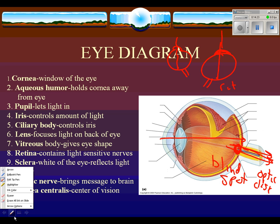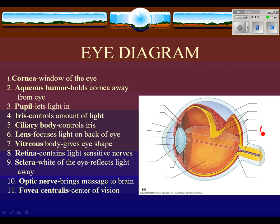Number eleven is the fovea centralis, located directly behind the lens. That is the center of your vision. If you concentrate on what's not in the center of your vision right now, you'll notice it's a little foggy — you can't see it very well. Next time we meet, we'll discuss why the fovea centralis provides such detailed vision and why the rest of your visual field is less sharp. Those are the parts of the eye you need to know and generally what they do.